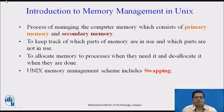First we will see memory management in Unix. Memory management is the functionality of an operating system which handles or manages primary memory and moves processes back and forth between main memory and the disk during execution. Memory management keeps track of each and every memory location regardless of whether it is allocated to some process or it is free. It checks how much memory is to be allocated to processes, decides which process will get memory at what time, and tracks whenever some memory gets freed or unallocated and correspondingly updates the status.